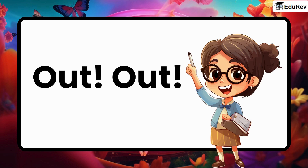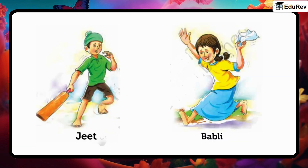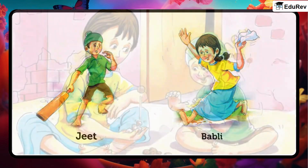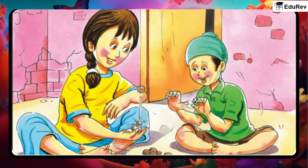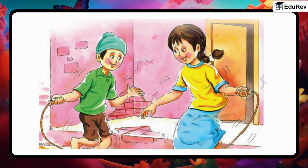Out Out. It was a holiday. Jeet and Bubbly were playing. They played many games. Both of them skipped the rope. They played hide and seek.